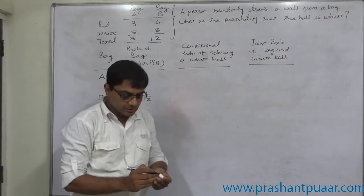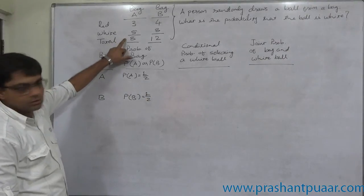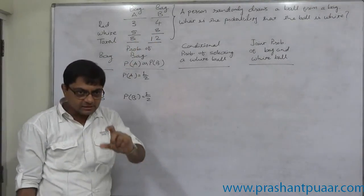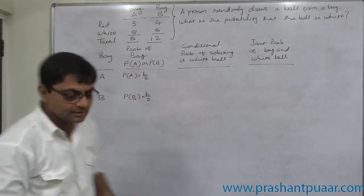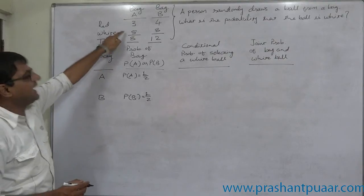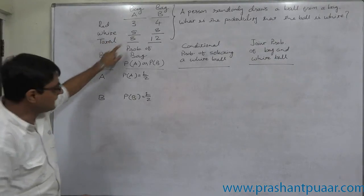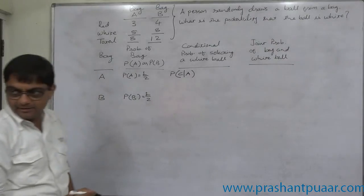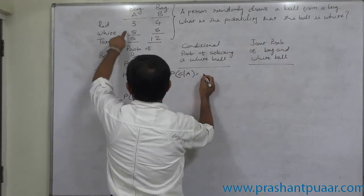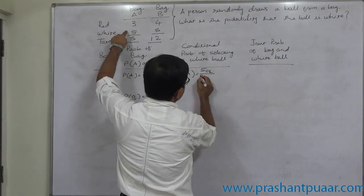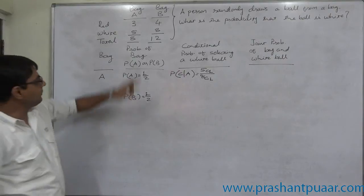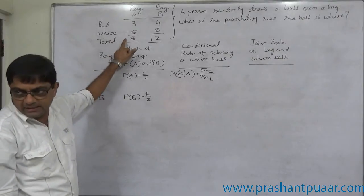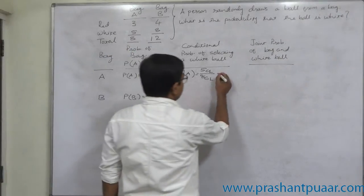Now for the conditional probability — in bag A there are 5 white balls out of 8 total balls, and in bag B there are 8 white balls out of 12 total balls, making the selection of a white ball a conditional event. If a white ball is selected from bag A, the probability is 5C1 divided by 8C1. One white ball out of 5 can be selected in 5C1 ways, and one ball out of 8 in 8C1 ways. So the probability is 5 by 8.